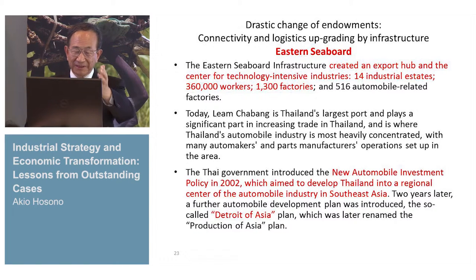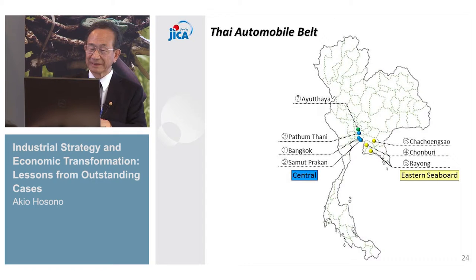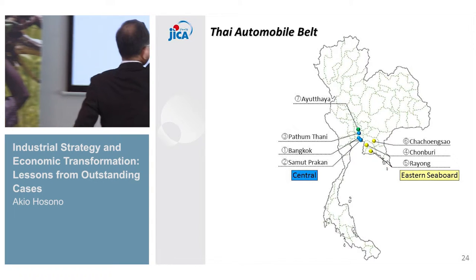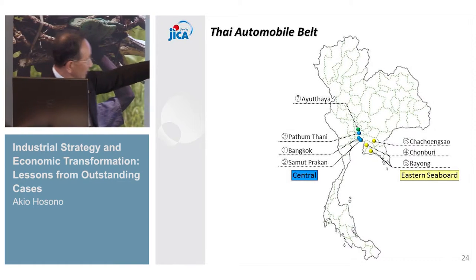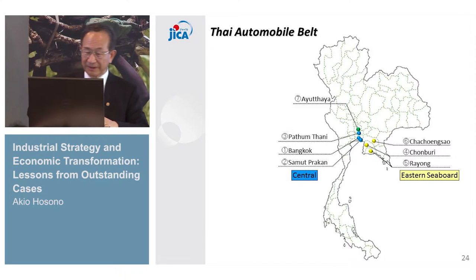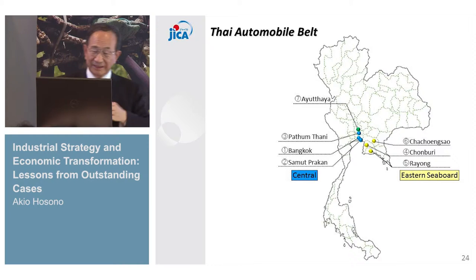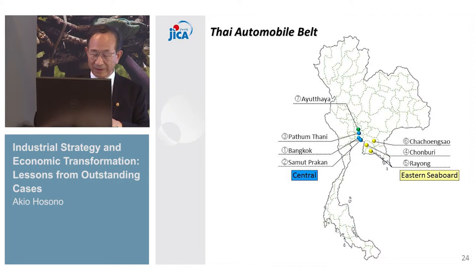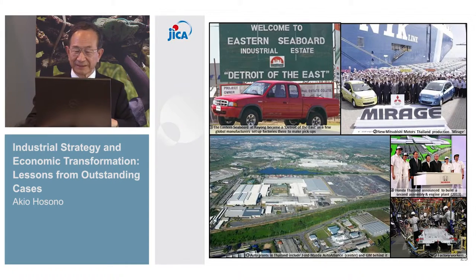I would like to emphasize the importance of the Eastern Seaboard. This is the main original part of the Thai automobile industry. The yellow part is the Eastern Seaboard. Without the Eastern Seaboard, I think the establishment of the Detroit of Asia could have been much more difficult. You can see the Eastern Seaboard industrial estate — there are many industrial estates like this.